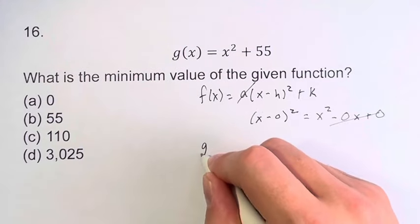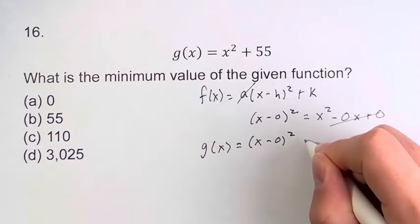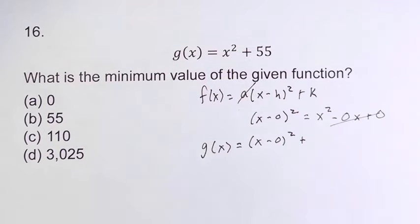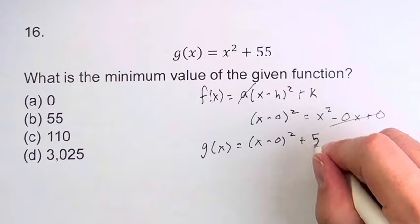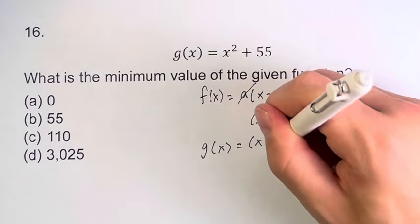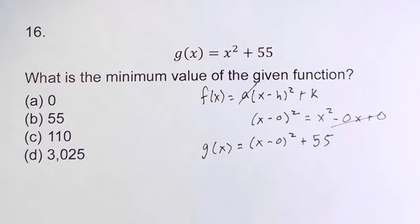Therefore, we have g of x is equal to x minus 0 squared plus k. What is k? k is 55, what's left over, plus this term right here. However, since this term right here is 0, we don't even have to worry about it.